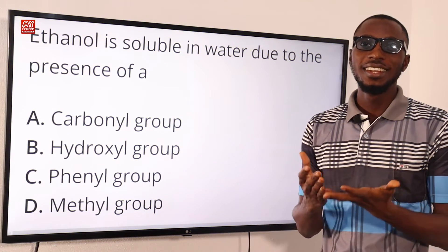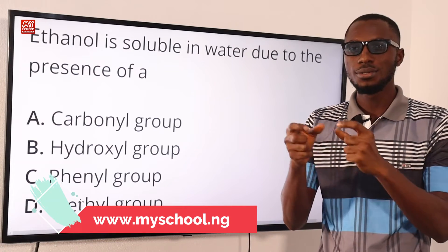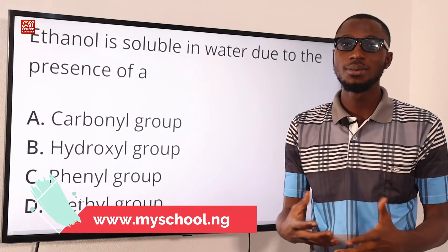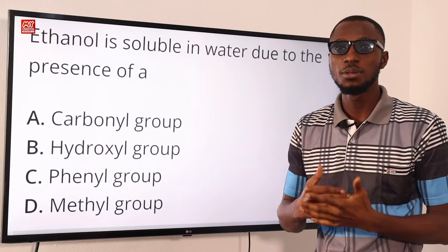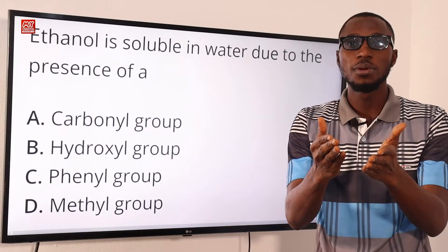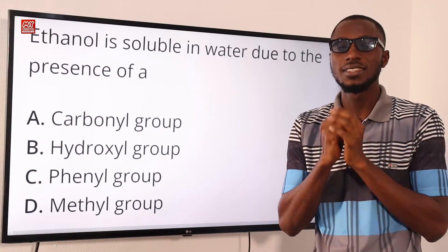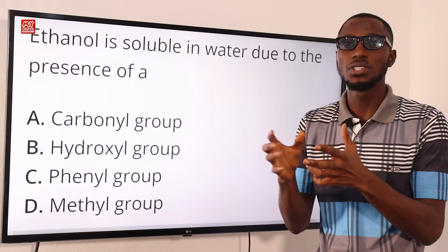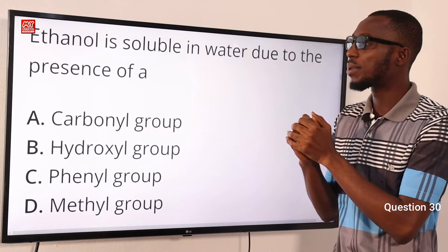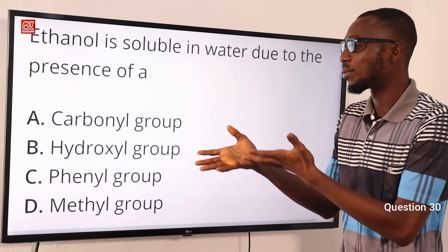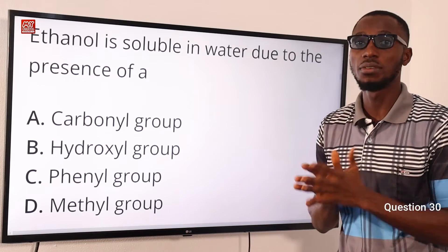Don't forget that the link in the description below will take you to the MySchool website where you can ask your questions and interact with several solution providers to get the answers you need in the simplest and easiest form. Right now we are tackling question 30. Ethanol is soluble in water due to the presence of its hydroxy group — this makes it soluble in all proportions. So the correct option here is option B.